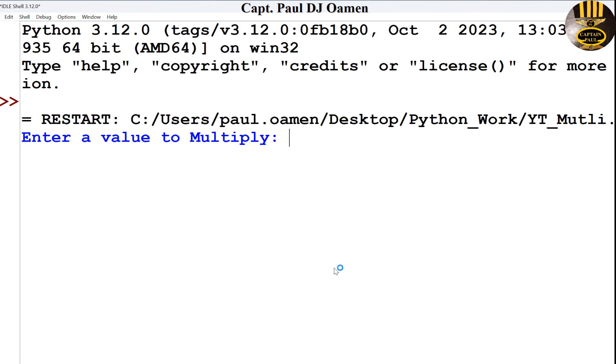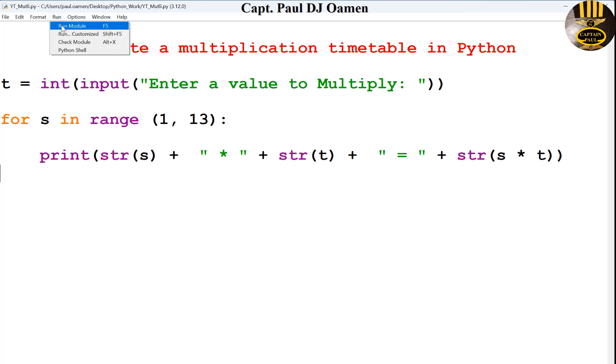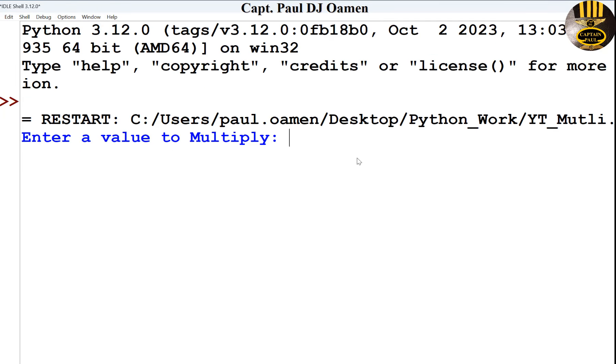and run. Enter a number to multiply, I'm gonna enter nine. There we go. Let's change it and try out another one. Run again and I'm just gonna enter maybe five.